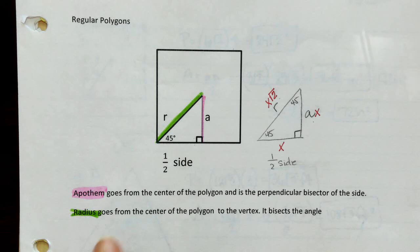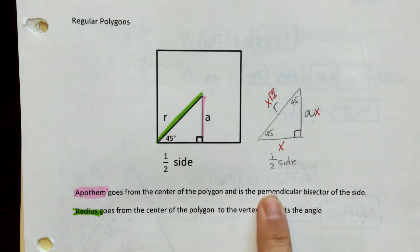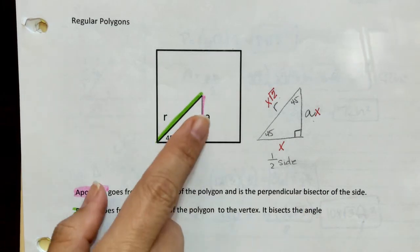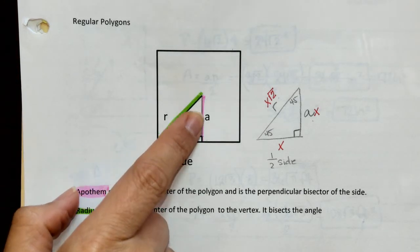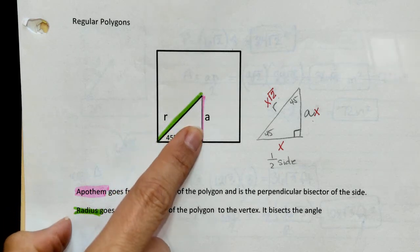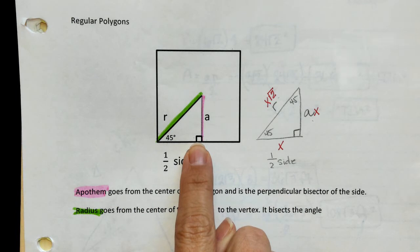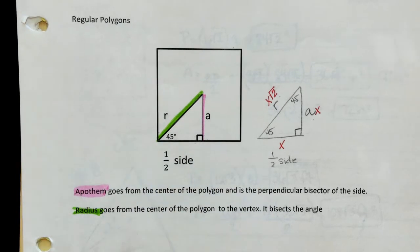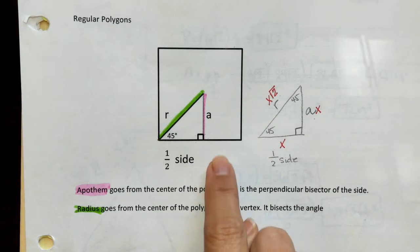So the apothem goes from the center of the polygon, and it is the perpendicular bisector of the side. I have it in pink from the center of my square to the side. Perpendicular bisector means it's going to form a 90-degree angle, and it is going to bisect the side of this square — so that would be half of the side here, and the other half would be here.